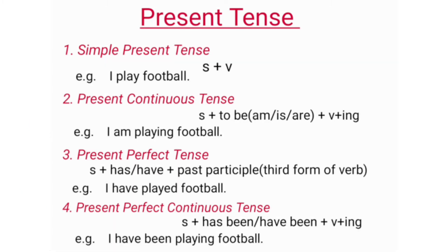Further, each type has four types. First, let's look at present tense. The four types of present tense are: Simple present tense, Present continuous tense, Present perfect tense, and Present perfect continuous tense.